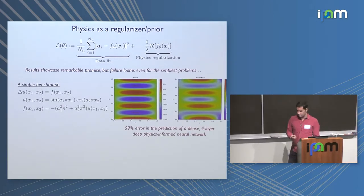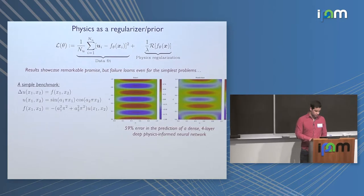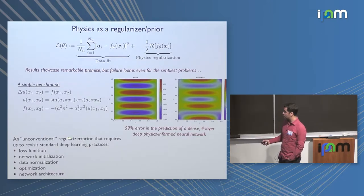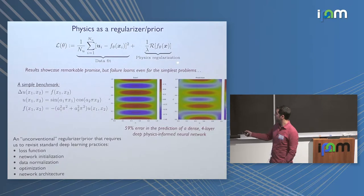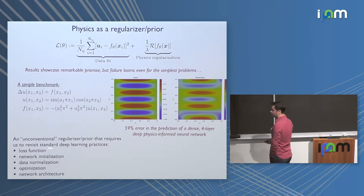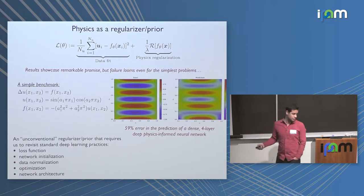What is really going on is that this framework cannot be applied as a black box. We need to take a step back and rethink how we set up these models, because they introduce an unconventional regularizer. Typically you regularize the parameters of your neural net with an L2 or L1 norm over the parameters, but here this is an actual constraint over the function space — not just a norm of the parameter set, but a constraint on the output of the neural net. This unconventional prior requires us to revisit standard deep learning practices.